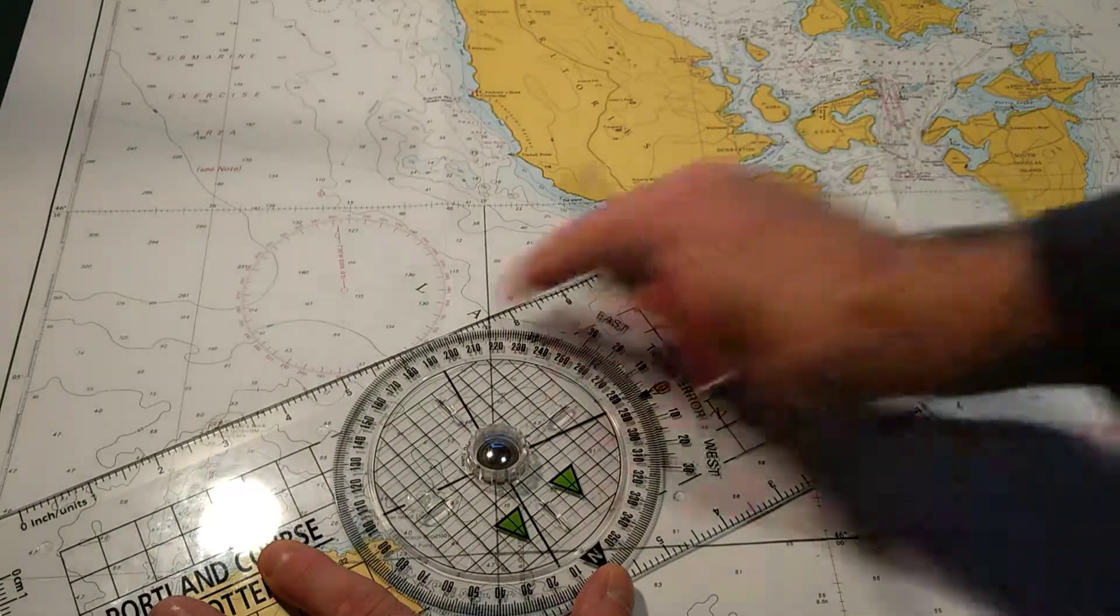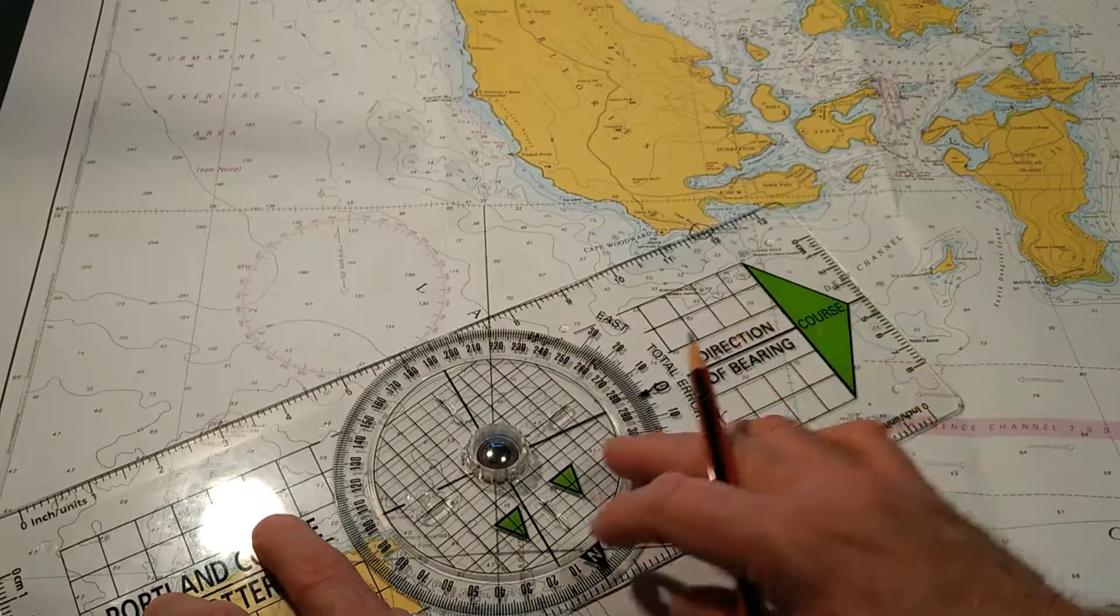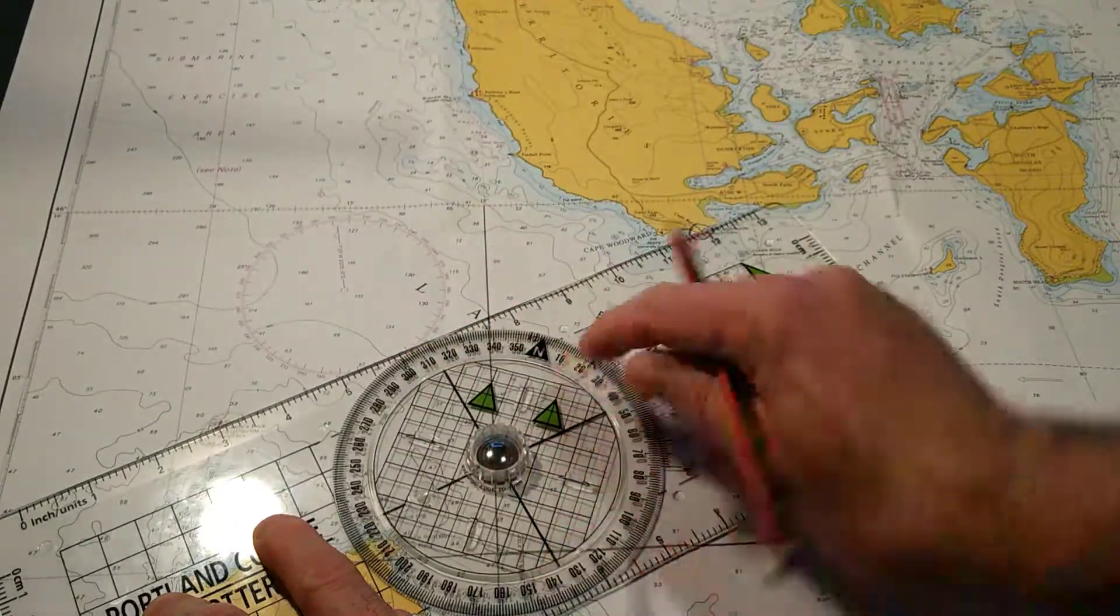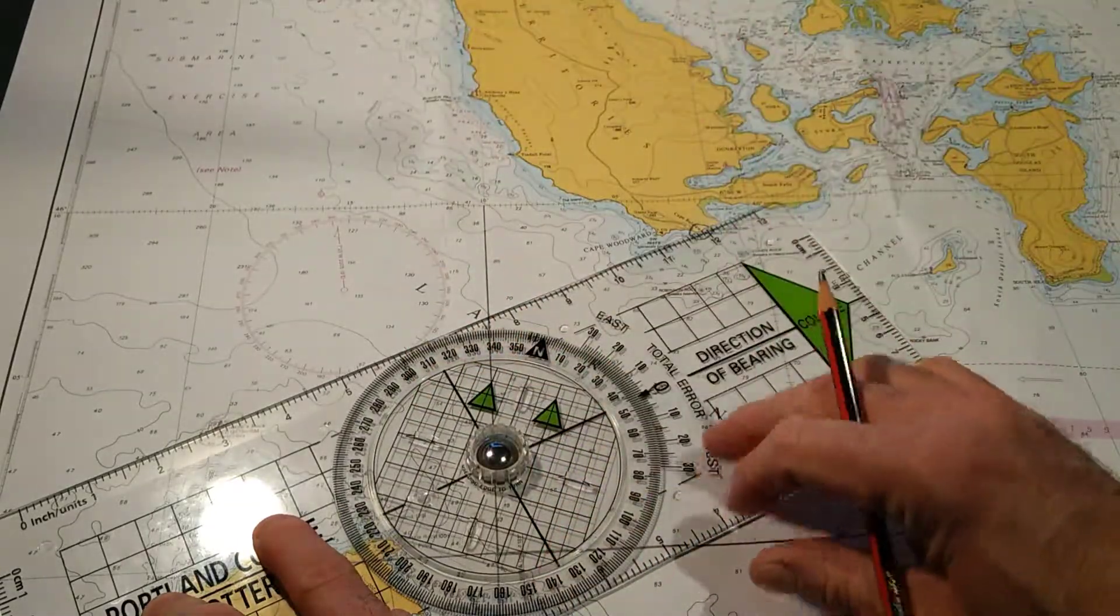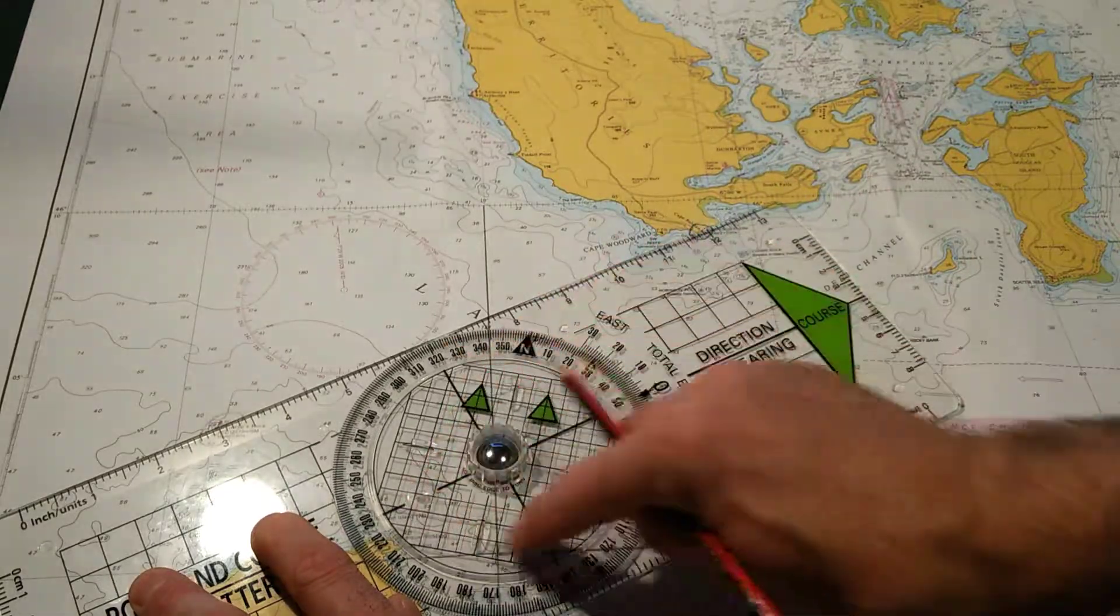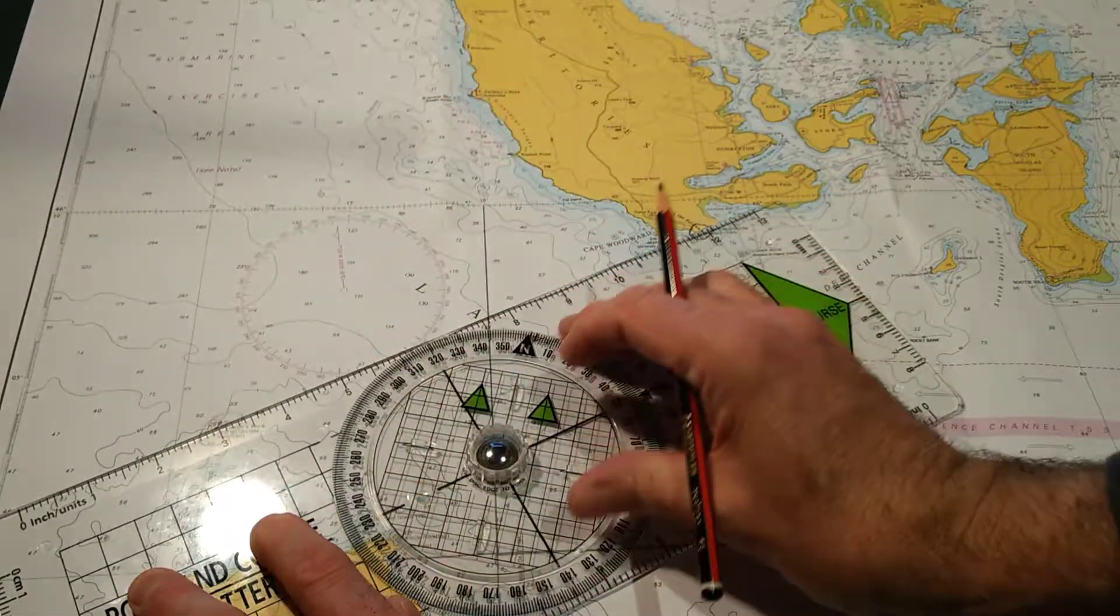Lining up the two points with the edge of the plotter, holding the base plate firmly, I rotate the center dial until north is pointing at the top of the chart. I now need to line up the grid lines parallel to the lines of latitude or longitude.